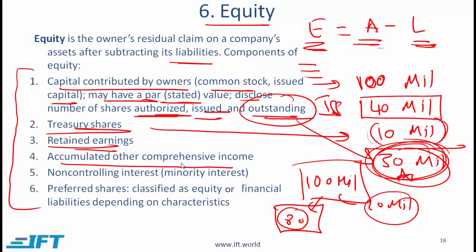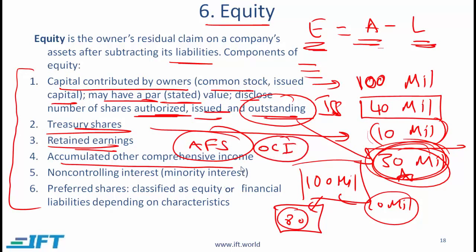Accumulated other comprehensive income — we have already talked about this. There are items such as available-for-sale securities where the unrealized gains on AFS are not passed through the income statement. They directly increase equity and their increase is reflected in the component of equity called other comprehensive income. There are three other items that cause OCI to go up, which you were asked to memorize in earlier reading.